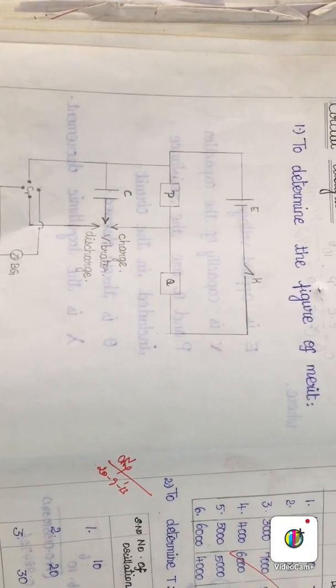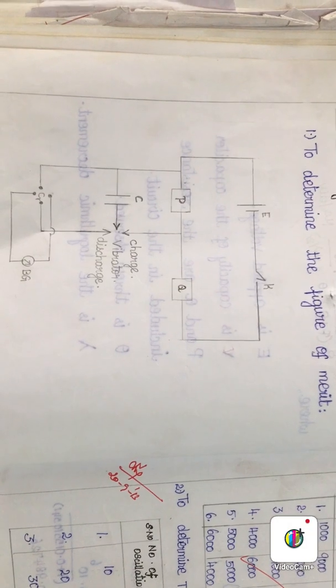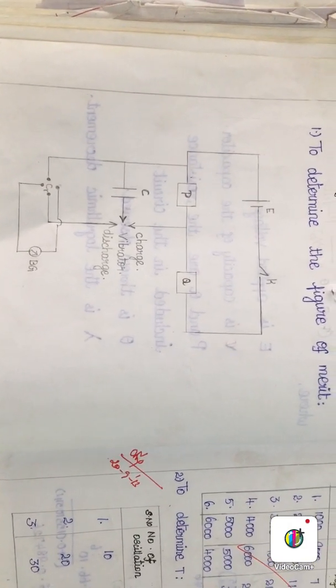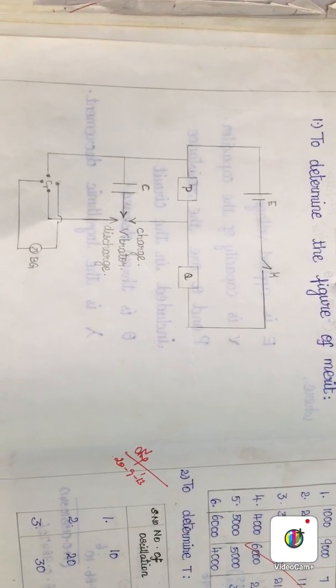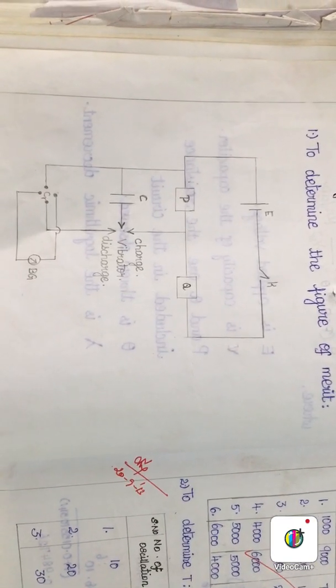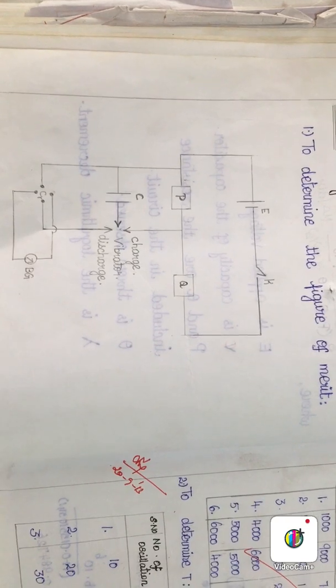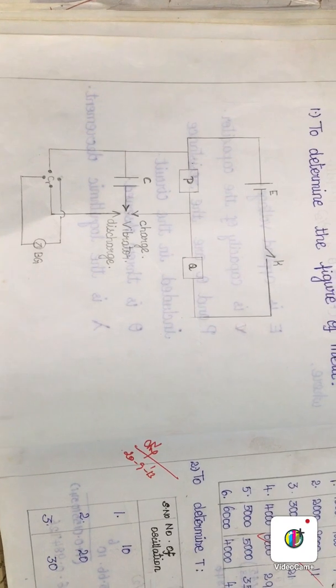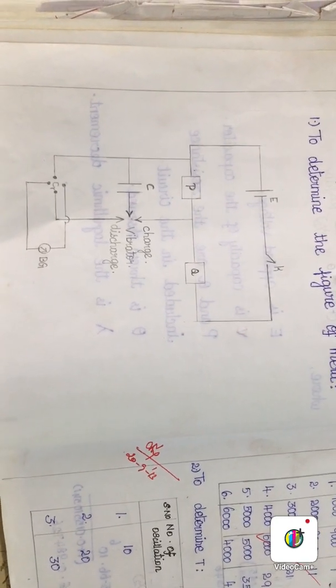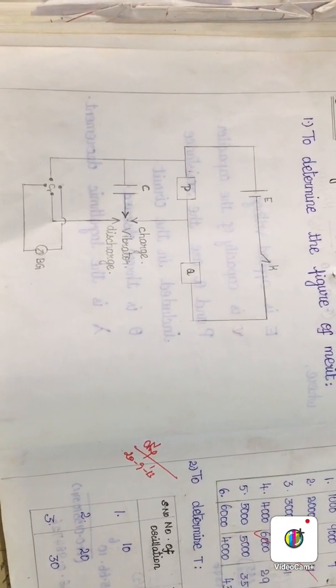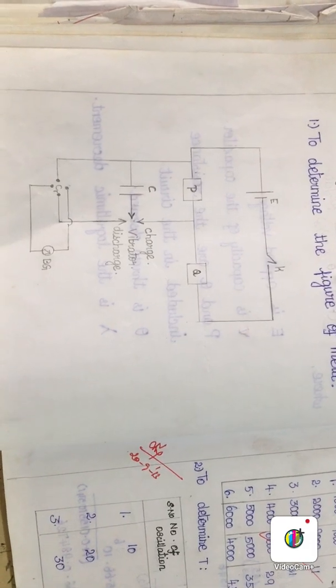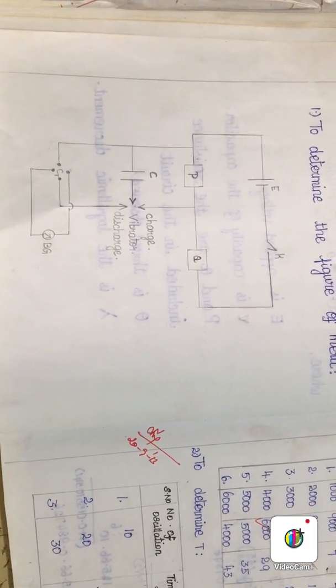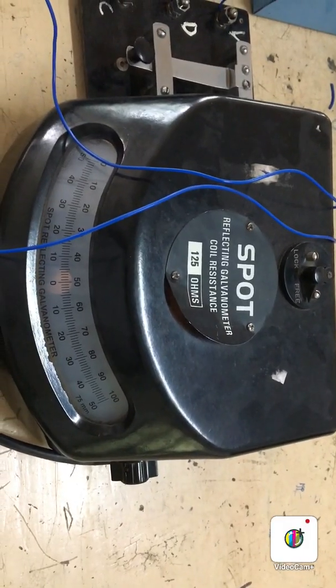Using this circuit we are going to wire up and determine the charge sensitivity of the BG. You can see there is an EMF connected to P and Q resistance boxes, the capacitor C is connected, there is a charge/vibrator and discharge key included in the circuit, and similarly there is a commutator and BG connected.